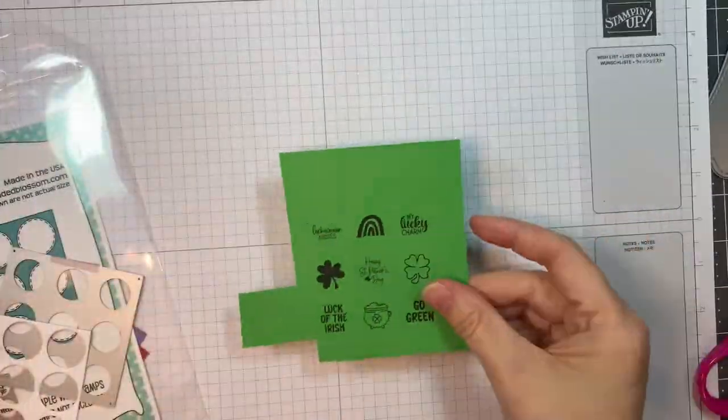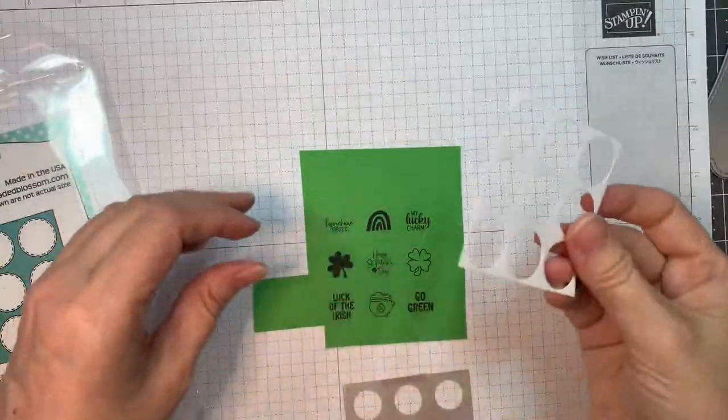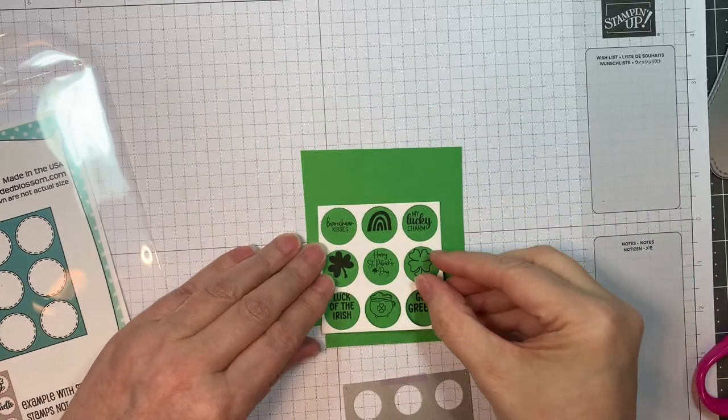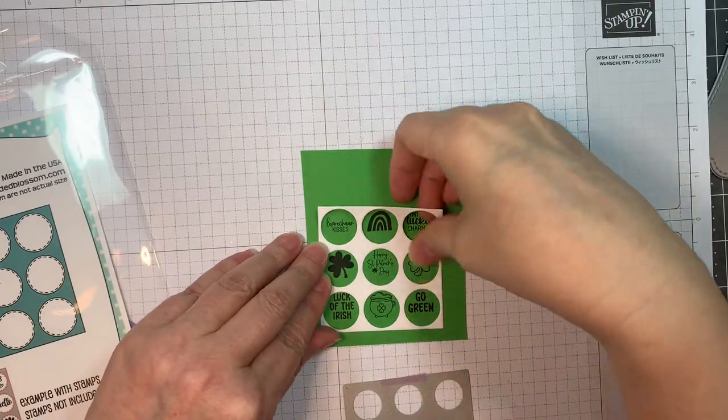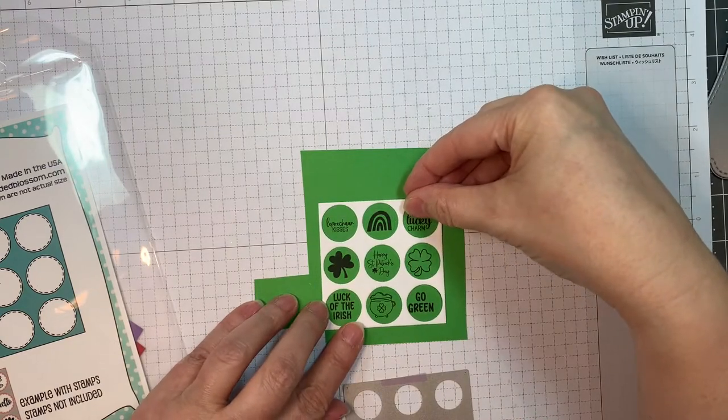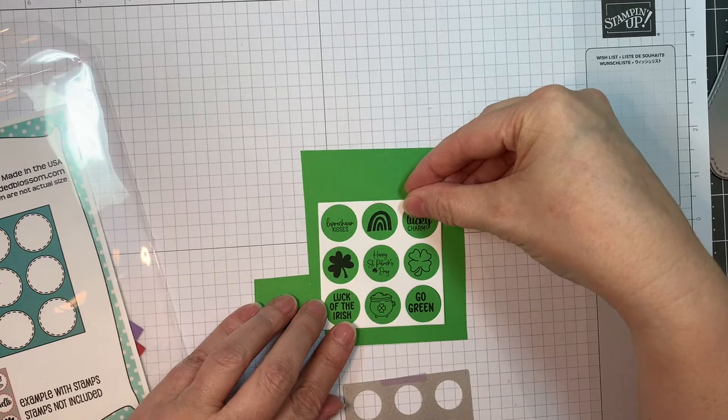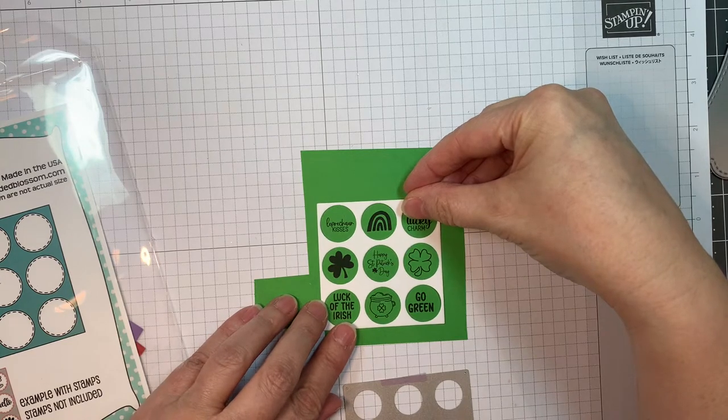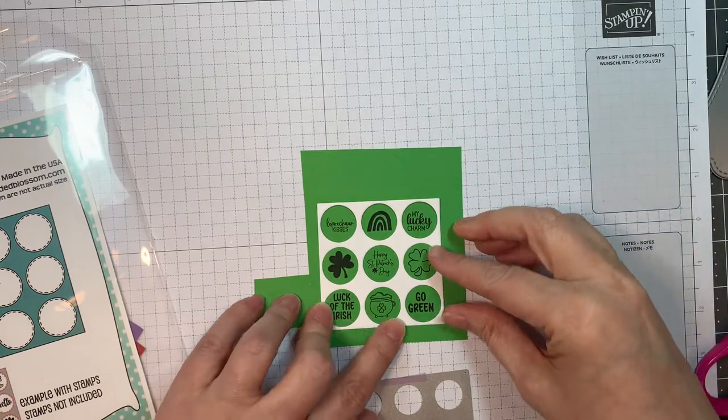These are two of them. I went ahead and stamped the St. Patrick's Day one out. I'm using the relief of the cut candy grid die to line it up with my stamped images. You'll cut out all these little circles at once with the stitching, so you can decorate nine candies at once, which is pretty handy.